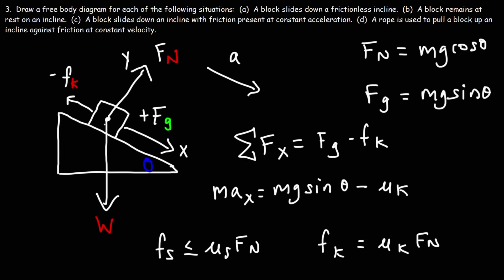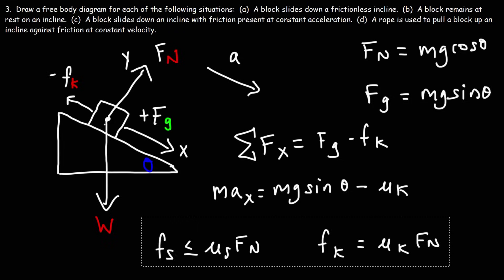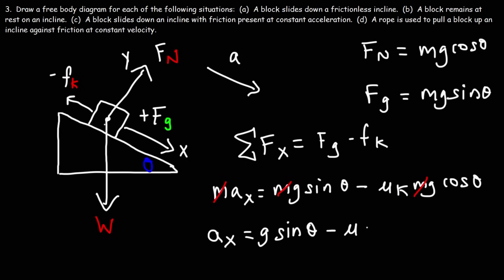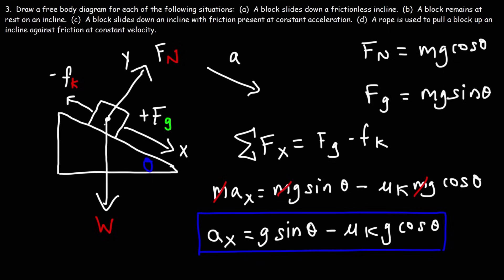Make sure you're aware of that difference between Fs and Fk. Fk equals mu k times the normal force, and the normal force is mg cosine theta. Since each term contains m, we can divide every term by m. Therefore, the acceleration in the x direction for this example is g sine theta minus mu k times g cosine theta.